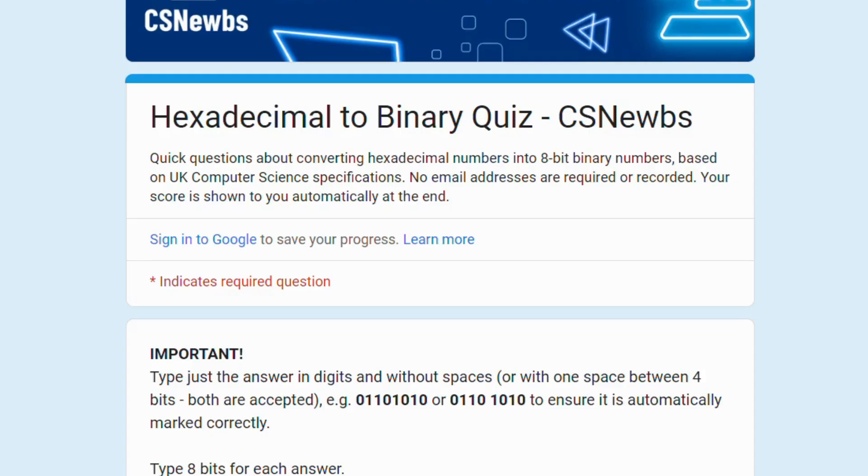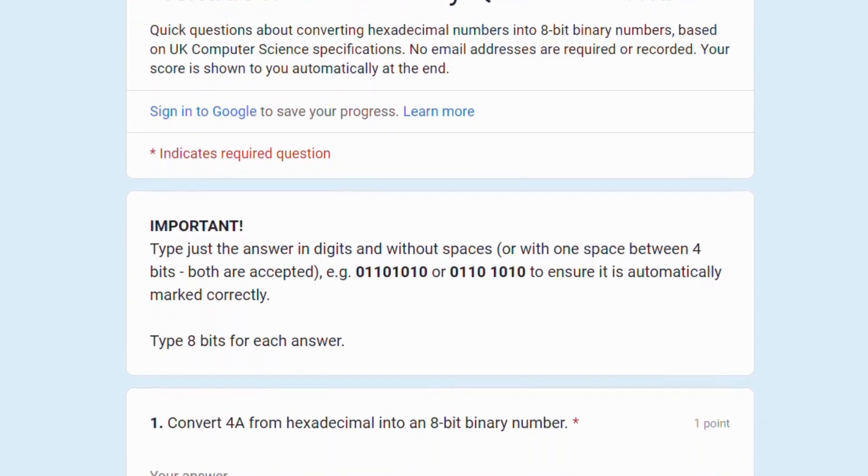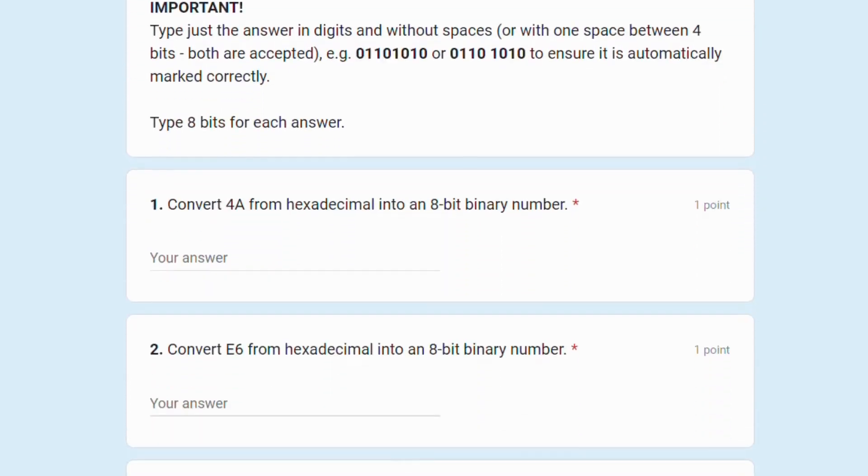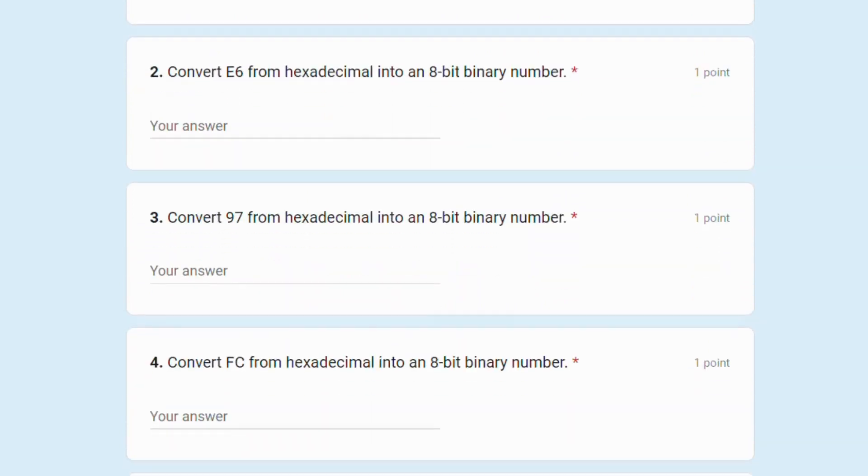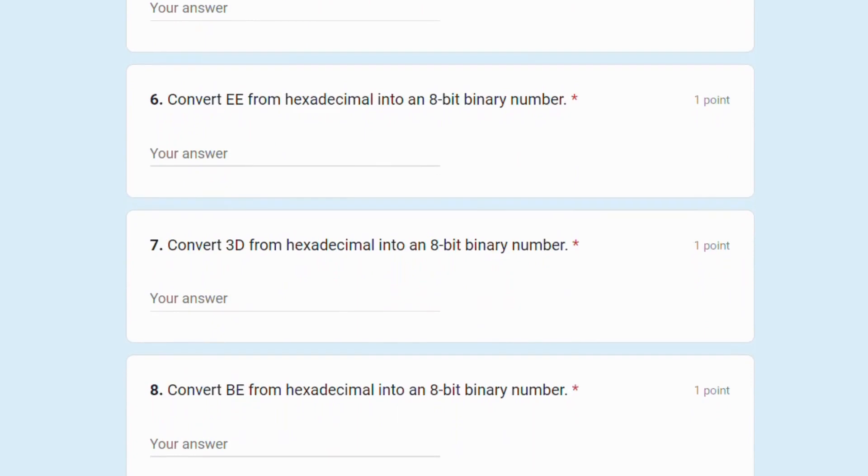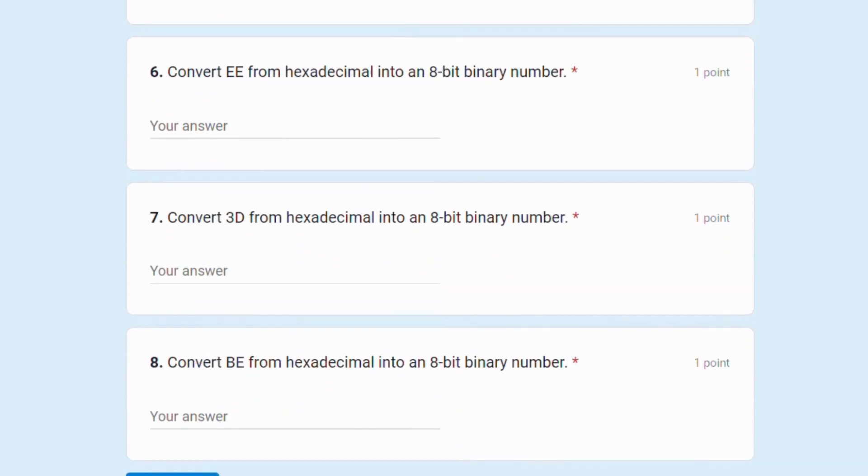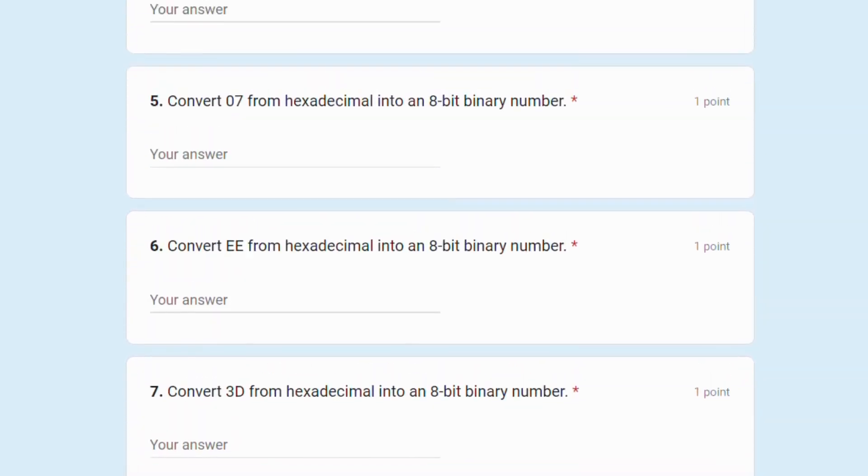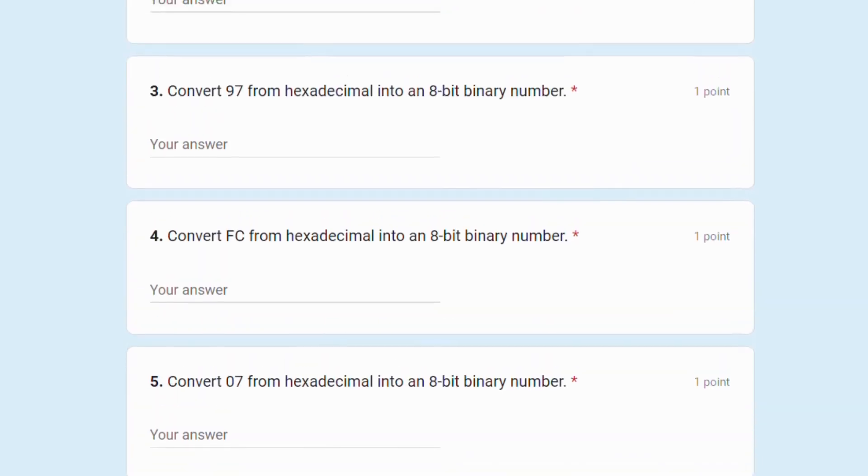In this video's description, as well as at the bottom of the relevant CS NOOMS pages, you can find a link to a Google form to test you on your understanding of converting hexadecimal into binary. Type your answer in 8 bits, with or without a single space between the 2 bits of 4. The form will mark it automatically and provide feedback for any answers that you got incorrect.